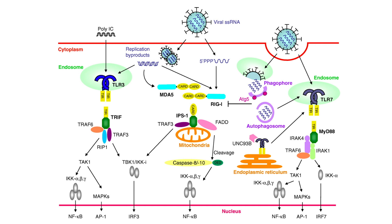Let us see how our body fights this virus. When viral proteins and the virus enter the cell, there are two receptors on the endosomes that detect them. TLR3, once it detects viral products, binds with TRIF and forms a complex with TRAF3, TRAF6, and RIP1. This complex ultimately results in the formation of type 1 interferon and NF-κB.